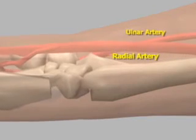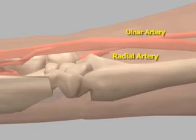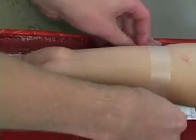Prior to sterile field preparation, position the wrist. By positioning the wrist in dorsiflexion, the radial artery is brought in closer approximation to the skin, which can be instrumental to the success of the procedure. Proper positioning can be maintained by placing a roll of gauze under the wrist or by using a specially designed arm board and securing the arm with tape.